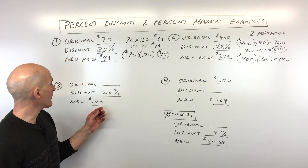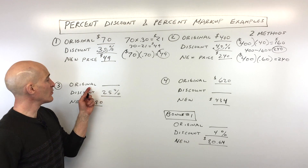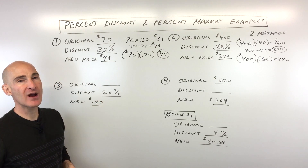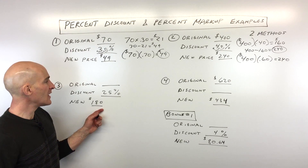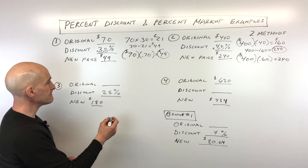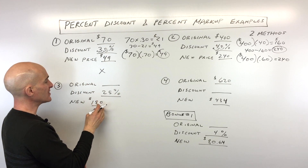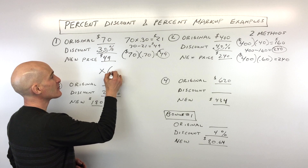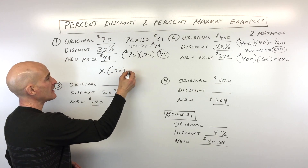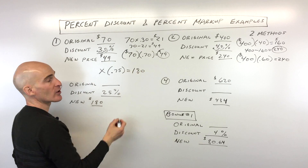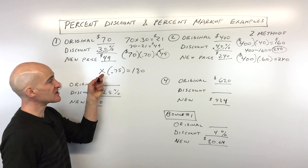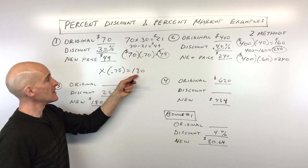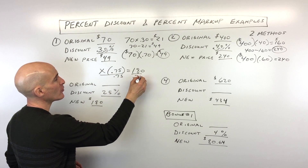Now let's jump into number three. This one is a little more challenging — we don't know the original price, but we know the new price and the discount. The new price is $180 and the discount is 25%, meaning you're paying 75%. Write an equation: X times 0.75 equals 180. To solve for X, divide both sides by 0.75.